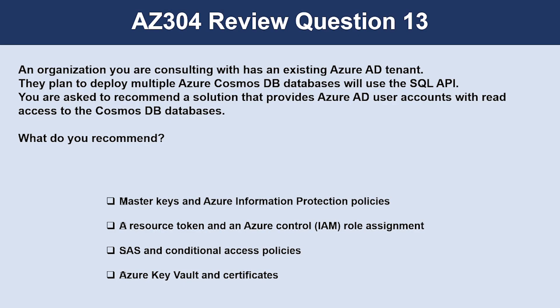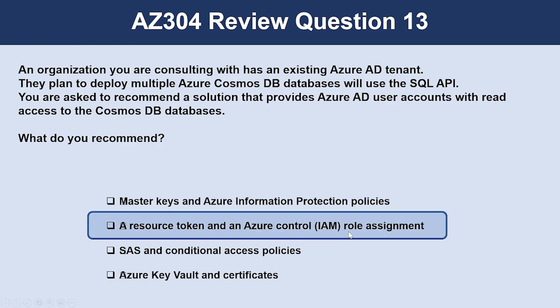Question number thirteen. An organization has an existing Azure AD tenant and plans to deploy multiple Azure Cosmos DB databases using the SQL API. You are asked to recommend a solution that provides Azure AD user accounts with read access to the Cosmos DB databases. The correct answer is a resource token and Azure role-based access control role assignment. You can use a resource token to provide access to Cosmos DB resources to a client that cannot be trusted with the master key. Use the access control IAM option in the Azure portal to add Cosmos DB account reader access.